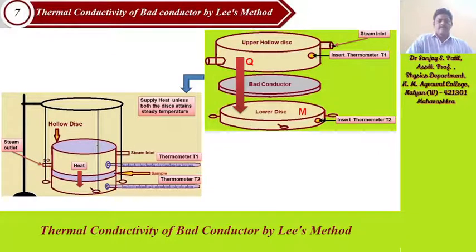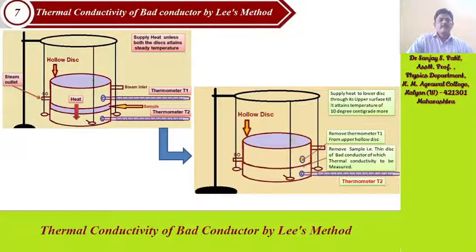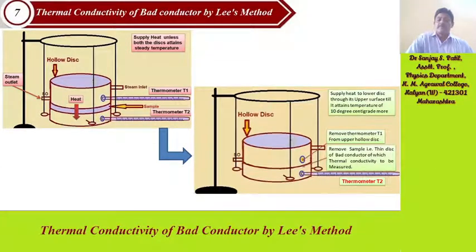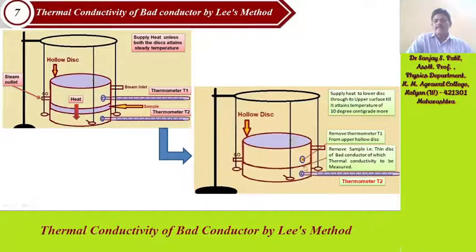Provide heat energy until both thermometers attain a steady-state temperature. Supply heat until both disks attain steady-state temperature: thermometer T1 shows temperature theta1 and thermometer T2 shows temperature theta2 in degrees centigrade. Once both disks attain steady-state temperature, remove the bad conductor and thermometer from the upper hollow disk. Both disks are now in contact with each other.